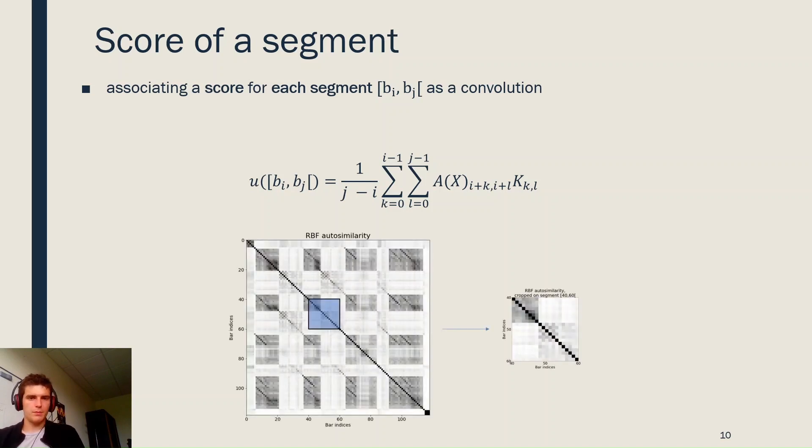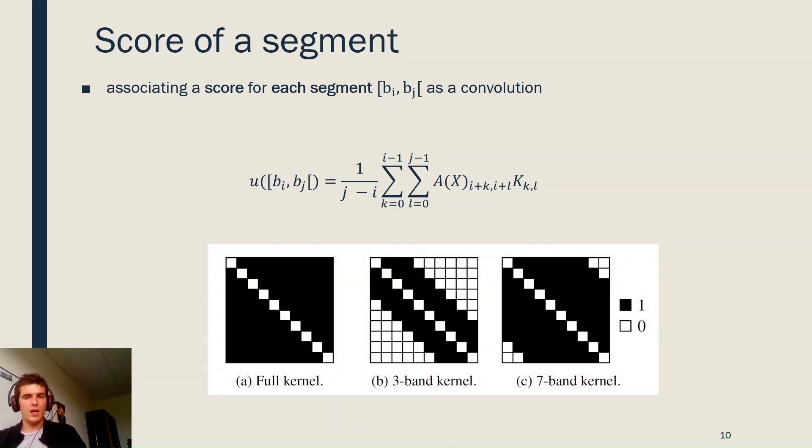To give a concrete example, let's take the segment 40-60 here. We restrict the auto-similarity values to this segment, and we apply a kernel matrix K. Here, three examples of kernel matrices are presented.